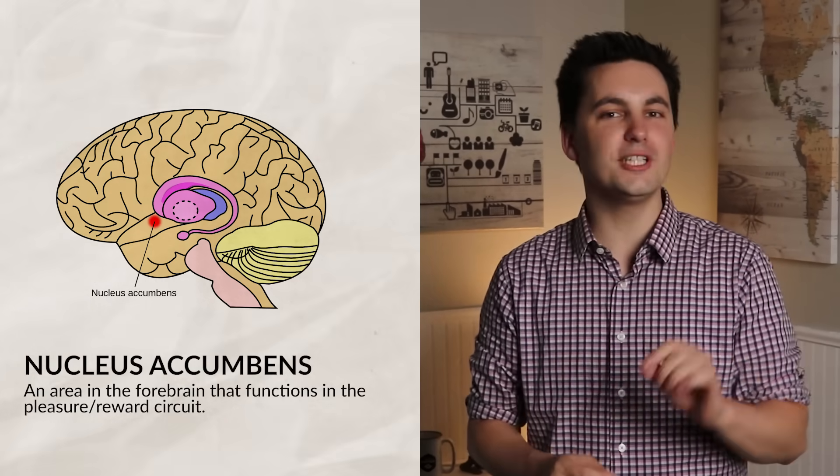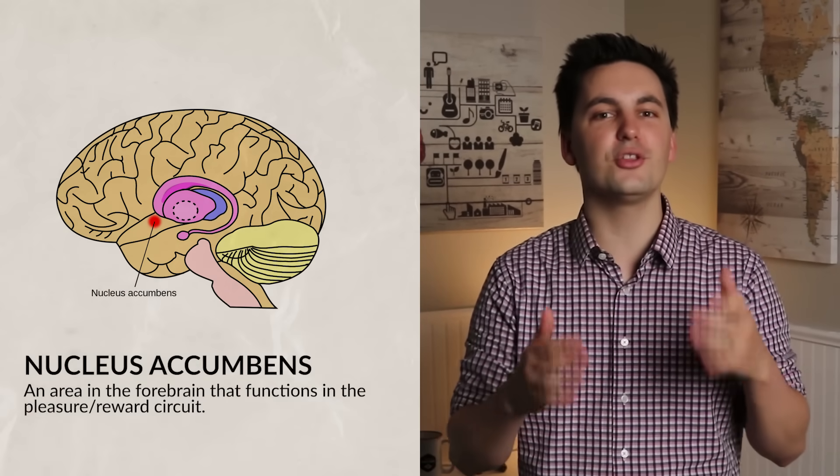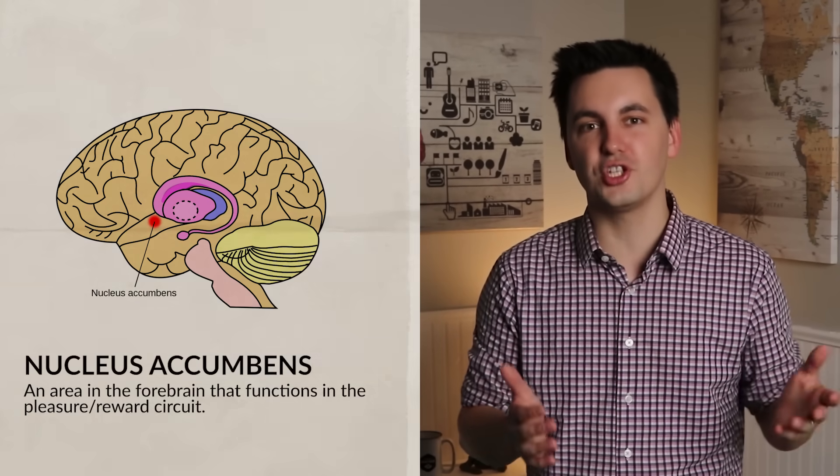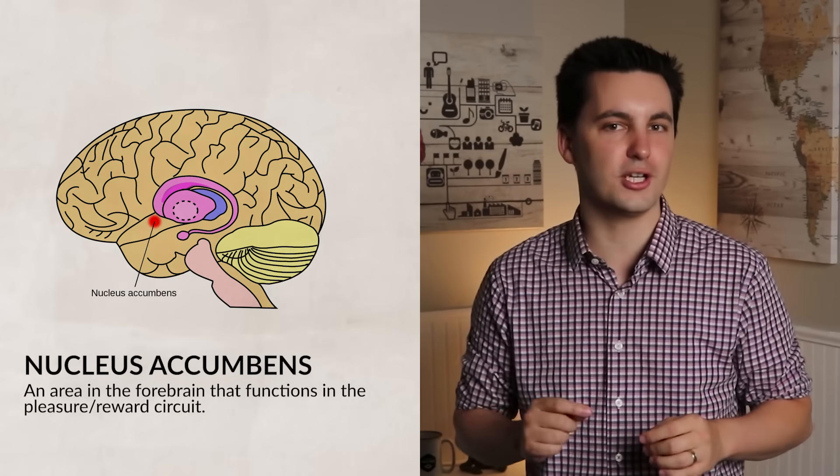Okay, so first we have the nucleus accumbens. This is located in the forebrain, near the limbic system. It's associated with drug dependency, as its function is in the pleasure and reward circuit and motivation.